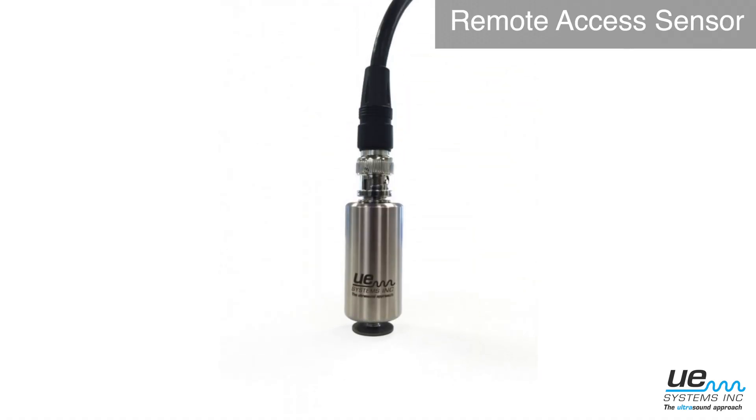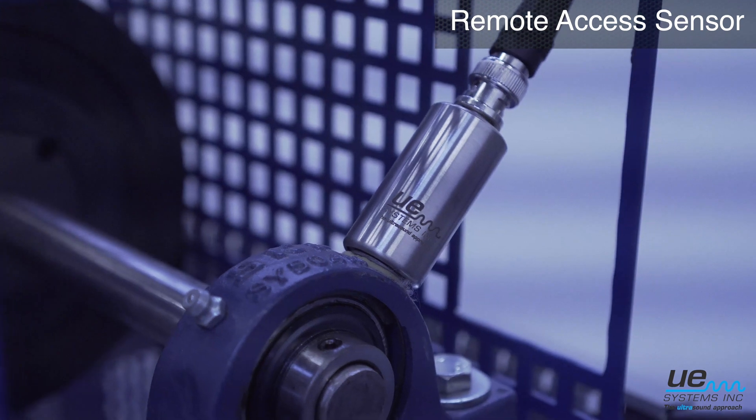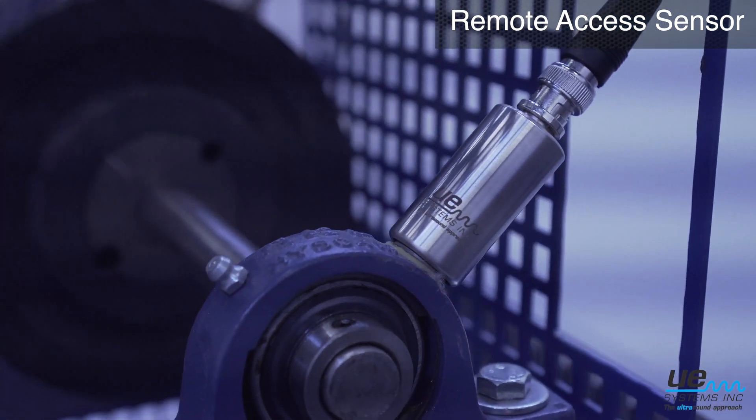First, you need to install a remote access sensor on the bearing. These sensors are permanently mounted and are very easy to install.